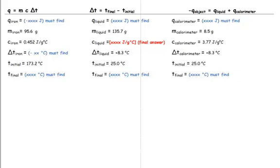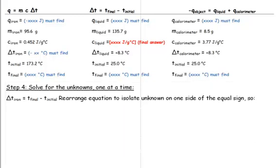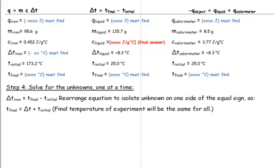We are ready to move on to step four: solve for the unknowns one at a time. The easiest thing to solve for at this point is the change in temperature. Iron actually has two unknowns in this equation, so the first thing we need to do is use the temperature information from the liquid and calorimeter to find the final temperature. The final temperature will be the same for all, because that is the mark of the end of a calorimetry experiment when the temperature has stopped changing. To find the final temperature, we add the change in temperature plus the initial temperature. That gives us a final of 33.3 degrees Celsius.